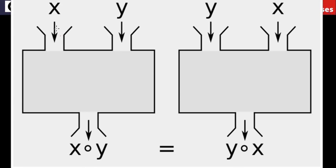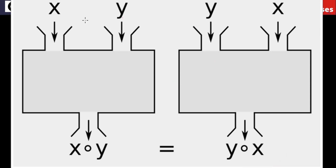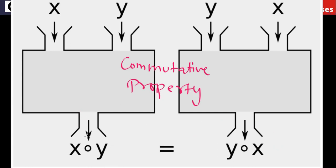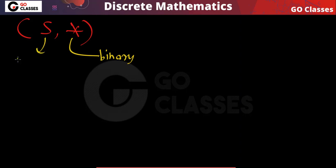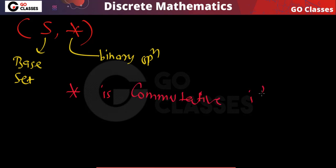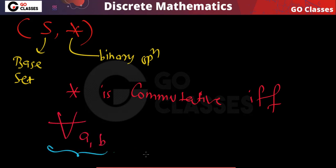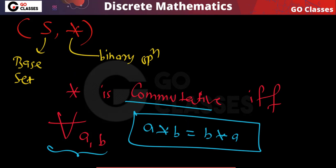Commutative property means whether you do x star y or y star x, they must be the same for all x, y — whatever two elements you take, this should always happen: x star y equals y star x. So, star is commutative if and only if for all a, b — whatever two elements you take, same or different — it should always hold that a star b equals b star a.